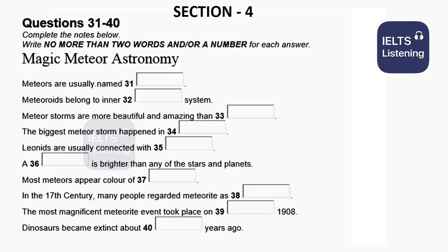Section 4. You will hear a conversation about astronomy. First, you have some time to look at questions 31 to 40. Now listen carefully and answer questions 31 to 40. This is Magic Time from the BBC. I am Faith. In today's programme, we invite a Professor of Astronomy. Welcome, Lewis. Thanks a lot, Faith. What magic information will you introduce to us? We all know the Leonids in August are coming. So today, let's talk about meteors.